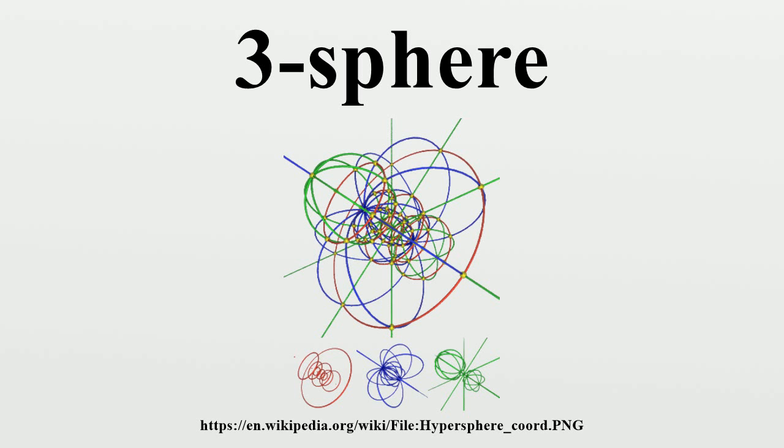There is an interesting action of the circle group T on S3 giving the three-sphere the structure of a principal circle bundle known as the Hopf bundle. If one thinks of S3 as a subset of C2, the orbit space of this action is homeomorphic to the two-sphere S2. Since S3 is not homeomorphic to S2 times S1, the Hopf bundle is non-trivial.